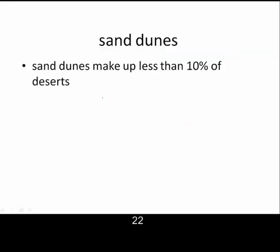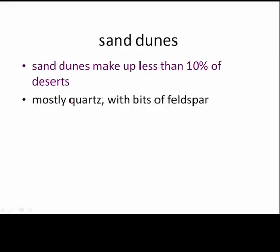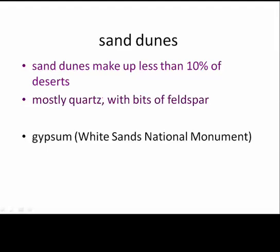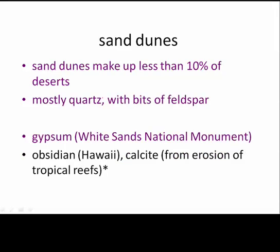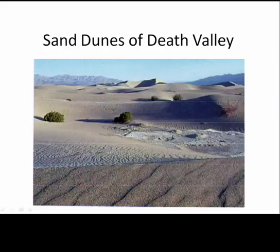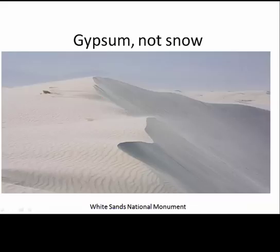Sand dunes are sand deposits. One thinks of sand dunes as making up deserts, but really they only make up less than 10% of a desert. Most sand is made of quartz, because quartz is one of the most resistant minerals, though it might have a few bits of feldspar. You could also have sand made of gypsum, as in White Sands National Monument, or even obsidian or calcite. Here we have the sand dunes of Death Valley — sand made of quartz — but at White Sands, that's not snow, that is gypsum.